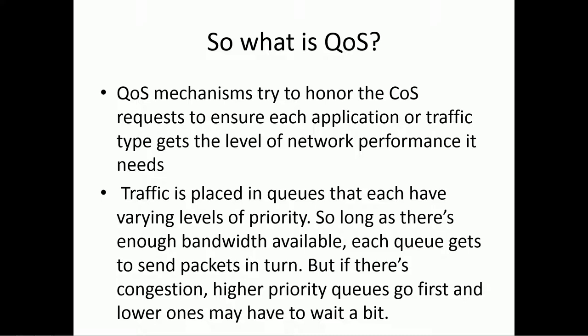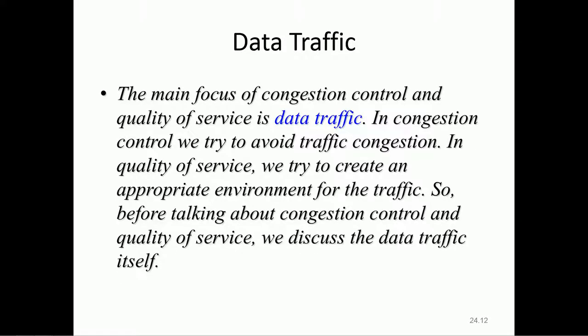Traffic is placed into queues — think of little buckets — and there should be enough bandwidth underneath the buckets to allow all buckets to empty. Higher-priority queues get sent first; lower-priority ones have to wait. Data traffic congestion control is necessary because data traffic is not symmetrical — it doesn't always get used up every day. Sometimes it'll go up, sometimes it'll go down.